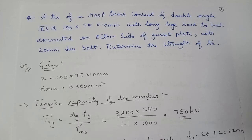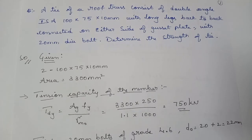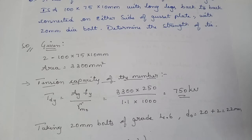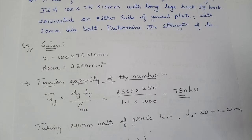From the steel table we get the area. To find the strength of the tie member, we need three main things: strength of the section in yielding, rupture, and block shear. As the number of bolts is not mentioned in the question, we first need to find out the number of bolts before proceeding with the problem.